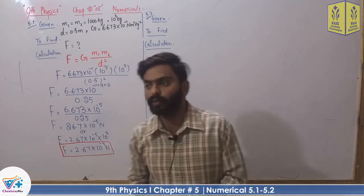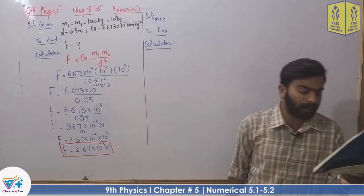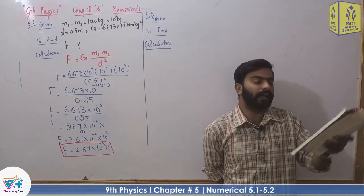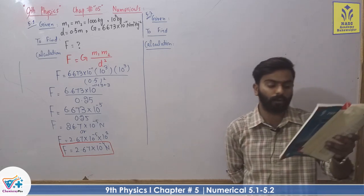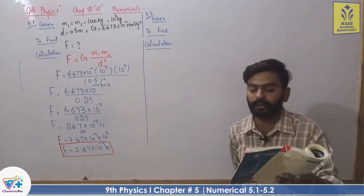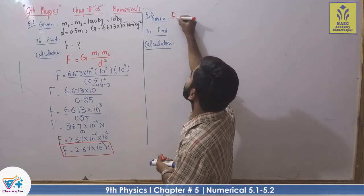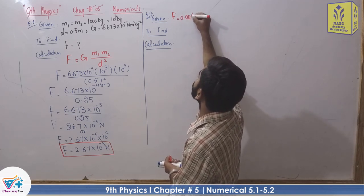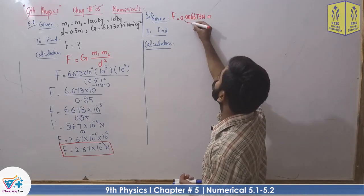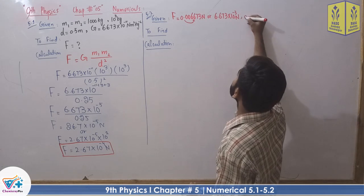Force F is equal to 2.67 multiplied by 10 raised to the power of minus 4 Newton, which is the gravitational force between two spheres each of mass 1000 kg. Now Numerical 5.2: the gravitational force between two identical lead spheres is 0.006673 Newton, which in scientific notation is 6.673 multiplied by 10 raise to the power minus 3 Newton. The distance is 1 meter. We have to find the mass.